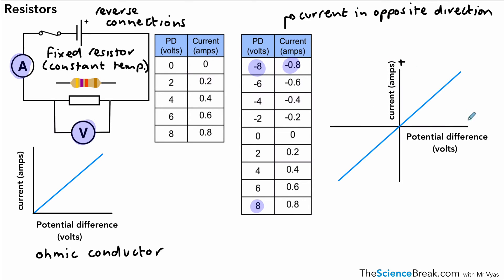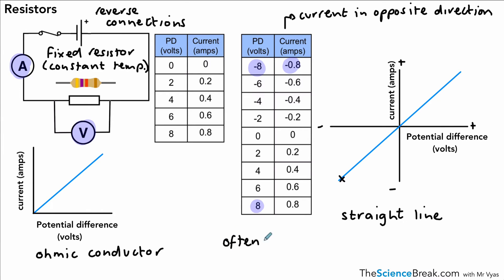Looking at the full graph, we have the positive region on the right-hand side and the negative region on the left. For a fixed resistor or ohmic conductor, we have a straight line — the relationship is proportional. The bigger the potential difference, the larger the current. However, this doesn't always happen, because often resistors change in value depending on the circumstances in the circuit.